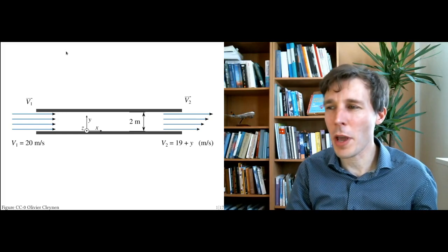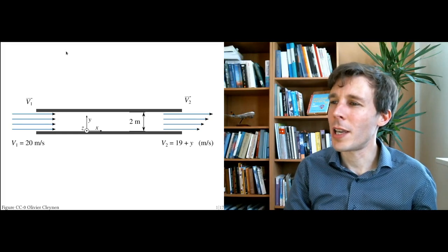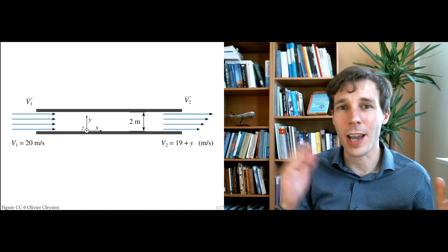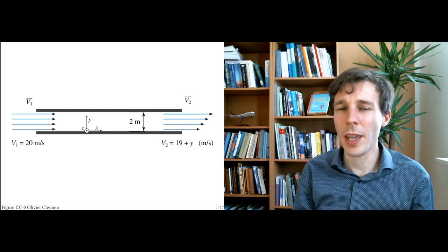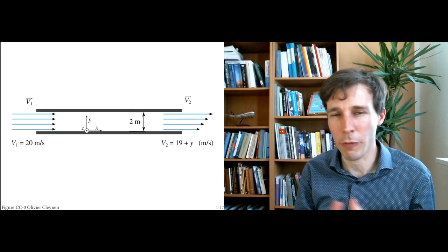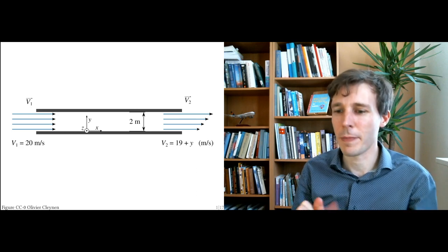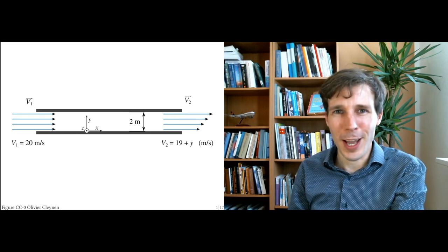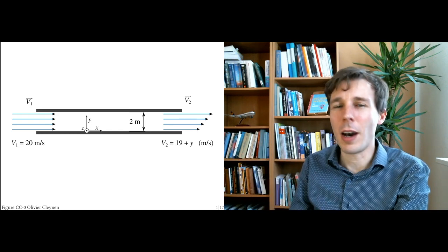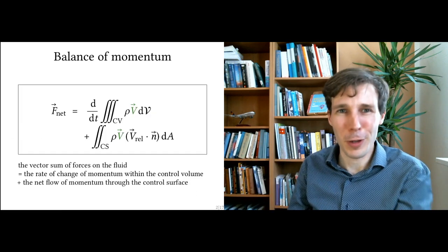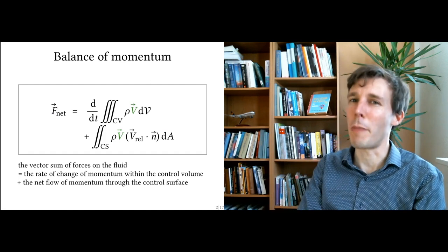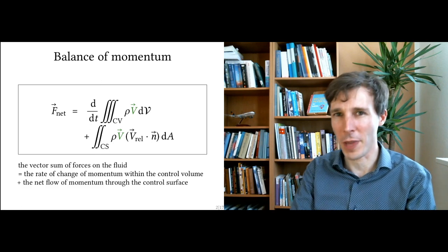In this problem we're taking a look at cases where the fluid velocity distribution at the inlet and at the outlet is different, and as a result a net force is exerted on the flow and we're trying to compute this. The answer is found using a very powerful and very general equation which is the balance of momentum equation in flow mechanics.